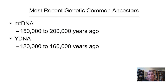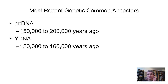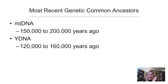Putting it all together with molecular clock estimates: the mitochondrial DNA most recent common ancestor is estimated at about 150,000 to 200,000 years ago, and the Y-DNA most recent common ancestor is estimated at 120,000 to 160,000 years ago. Consistently across many studies, the Y-DNA most recent common ancestor is coming back as more recent than the mitochondrial DNA ancestor, which means something different is happening on the female side versus the male side of ancestry.